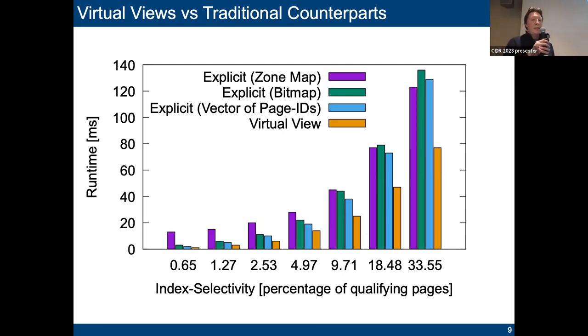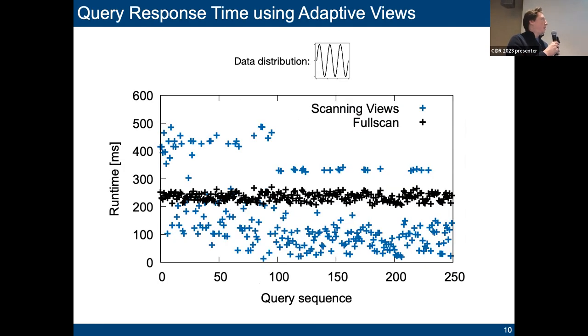The second question is, does it actually help to create them adaptively? You can see here on the x-axis we have such a query sequence of 250 queries. You can see that the queries that actually fall into ranges that are covered by partial views can actually be improved over the corresponding full scan baseline. Of course it requires the data distribution to fit, so you need some kind of clustering in your data. In this example we follow loosely a Zipf distribution, because we basically build a coarse granular index.